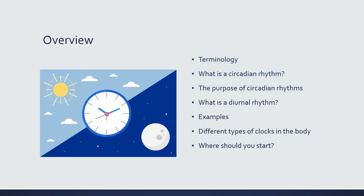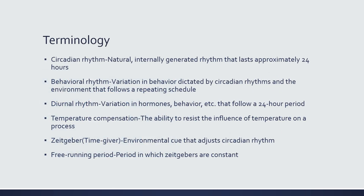To begin, we're going to discuss some terminology to help you understand circadian rhythms better. Then we'll discuss what a circadian rhythm is and what specific criteria need to be met. Then we'll talk about the purpose of circadian rhythms — how they optimize your physiology for the environment. We'll discuss the diurnal rhythm, which many people confuse with circadian rhythms, examples of circadian rhythms, the different types of clocks in the body, and we'll finish with where you should start in developing a lifestyle program to take advantage of circadian rhythms.